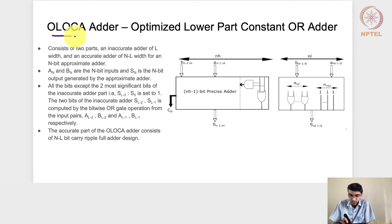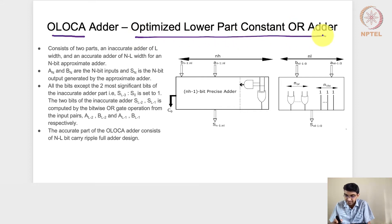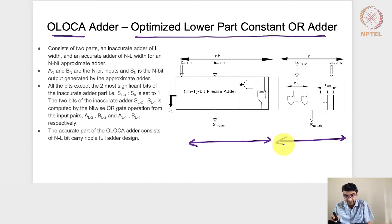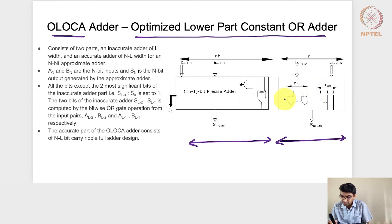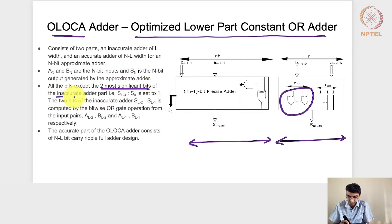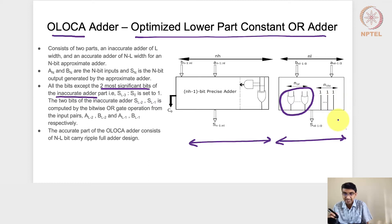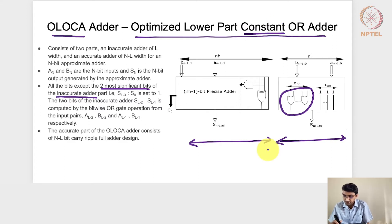The first adder used is the OLOCA adder — Optimized Lower Part Constant OR adder. It has two components: the MSB side and the LSB side. For an 8-bit adder, the four bits on the LSB side form the inaccurate part. In the LSB side, except for the two MSB bits, the remaining bits are considered as constant one, and an OR gate is used — hence the name.